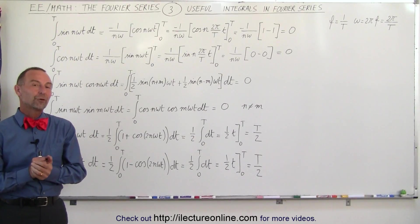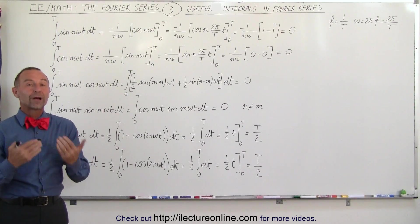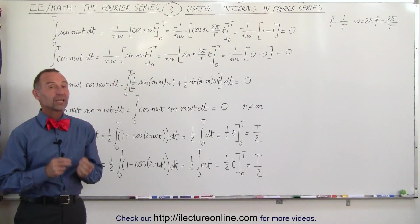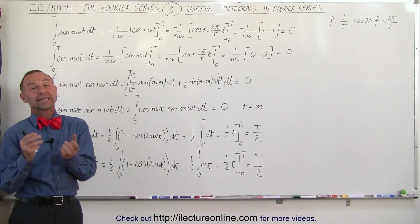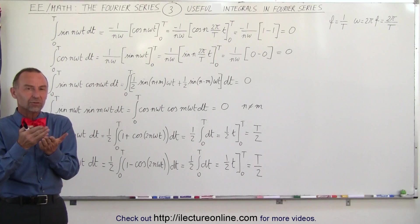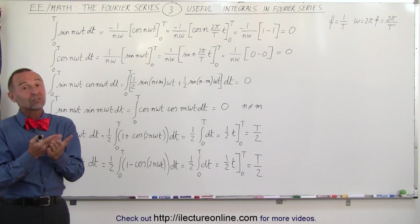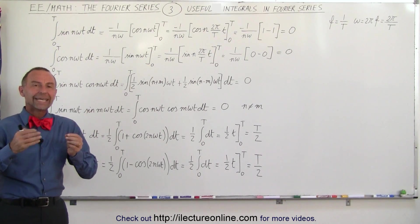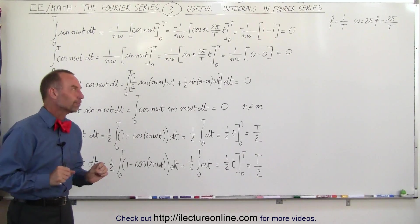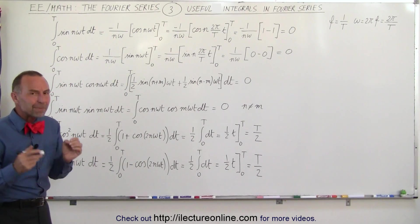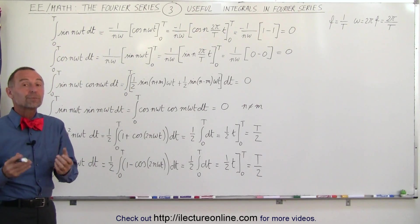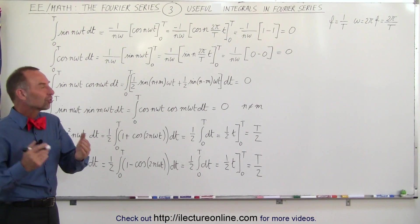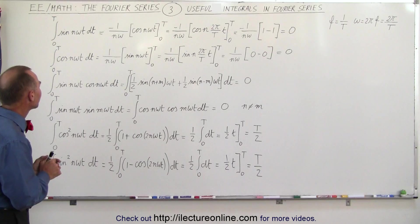Welcome to Electron Line. Before we actually try to find the Fourier series of all kinds of periodic functions, we need to realize that it comes down to finding those constants a sub n and b sub n, but that always involves integrating a whole bunch of integrals. It turns out that many of those integrals can be simplified because they will usually equal zero. Here are some of those we need to be familiar with.